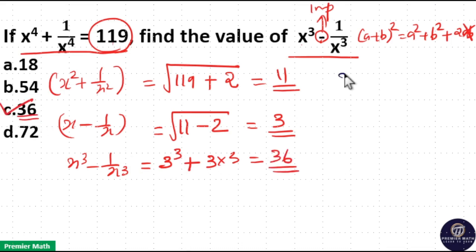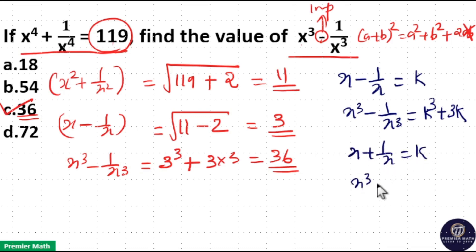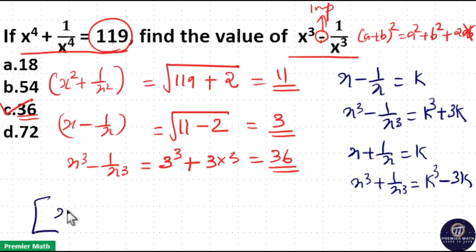That is, if you have x minus 1 by x as k, then x cube minus 1 by x cube should be k cube plus 3k. If you have x plus 1 by x as k, then x cube plus 1 by x cube should be k cube minus 3k. Or, you can apply and elaborate the formula, that is x minus 1 by x, the whole cube.